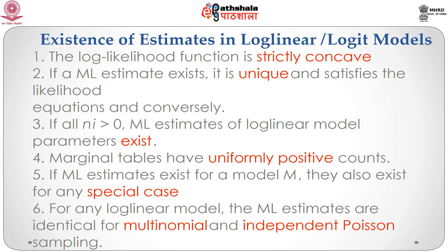Habermann showed the following results for Poisson sampling, which also apply to multinomial sampling. First, the log-likelihood function is a strictly concave function of log mu, where mu denotes the vector of expected cell counts. If an ML estimate of mu exists, it is unique and satisfies the likelihood equations X'n = X'mu-hat, where n is the vector of observed cell counts, mu-hat the estimated expected values, and X the design matrix. Conversely, if mu-hat satisfies the model and the likelihood equations, it is the ML estimate of mu.